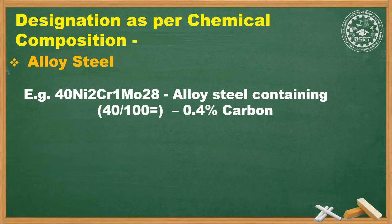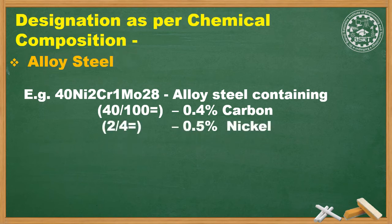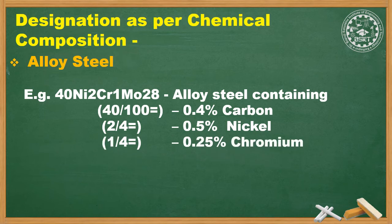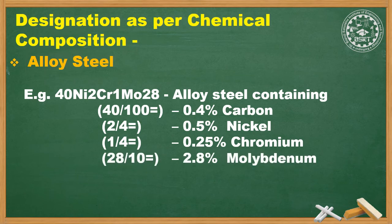For example, a designation containing 40 divided by 100 gives 0.4% carbon. Nickel has a dividing factor of 4, so 2 divided by 4 = 0.5% nickel. Chromium also has a dividing factor of 4, so 1 divided by 4 = 0.25% chromium. Molybdenum has a dividing factor of 10, so 28 divided by 10 = 2.8% molybdenum. You just need to understand and memorize the dividing factors for alloy steels.